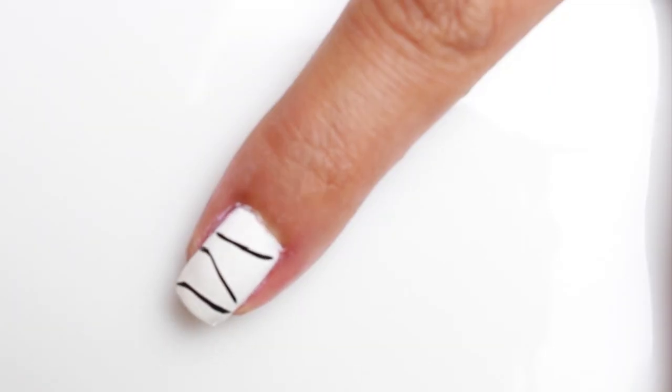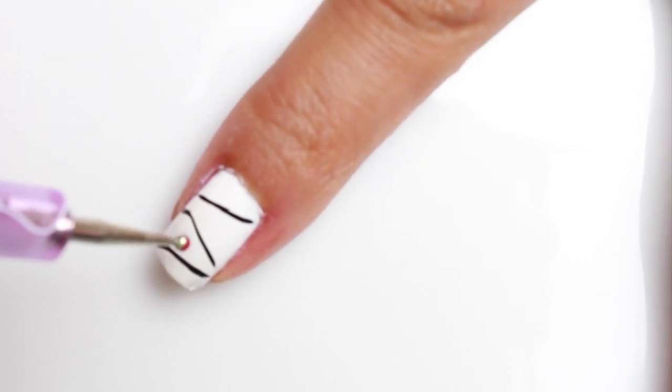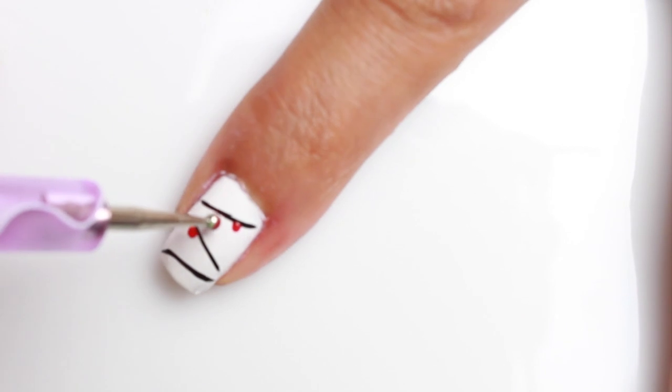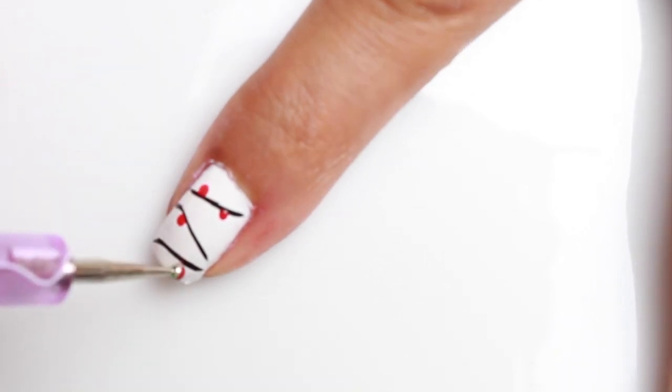Okay, now let's place some lights on our nail. And we're using the classic red and green colors. And as you can see, all I'm using is my dotting tool and applying dots all over. Just like so.